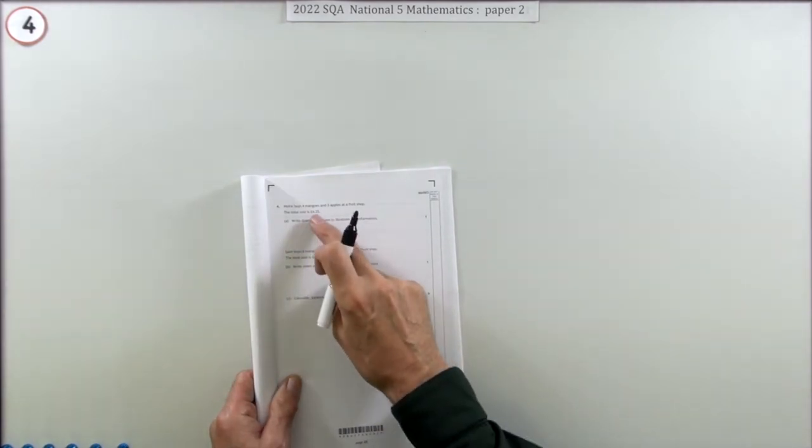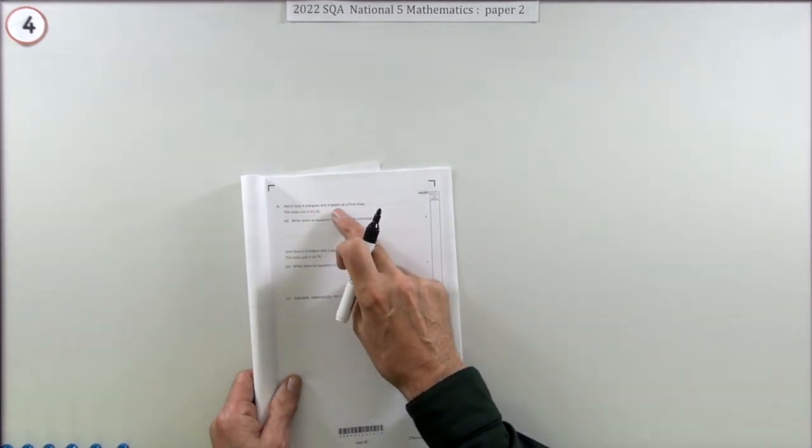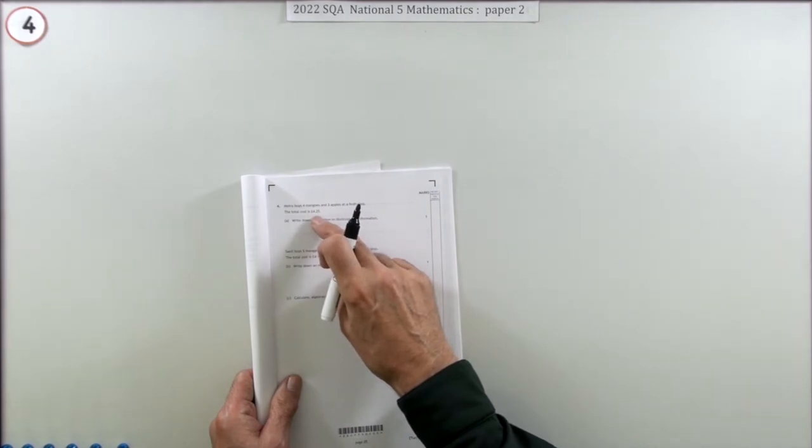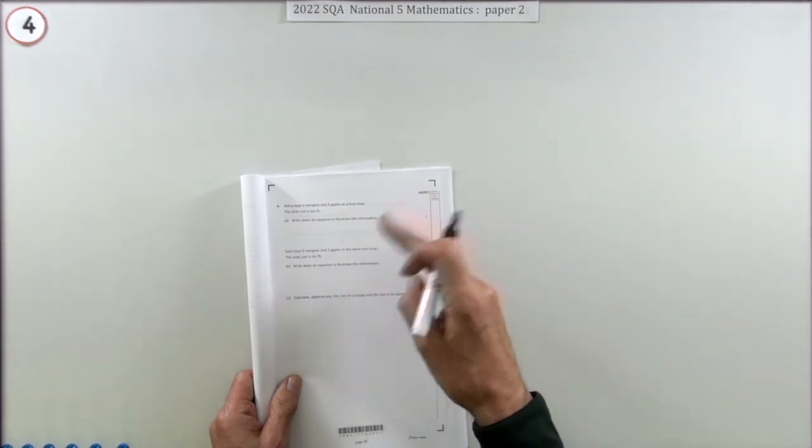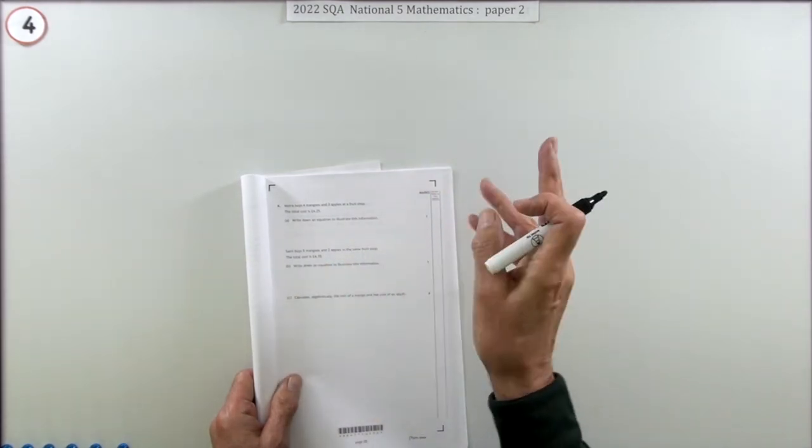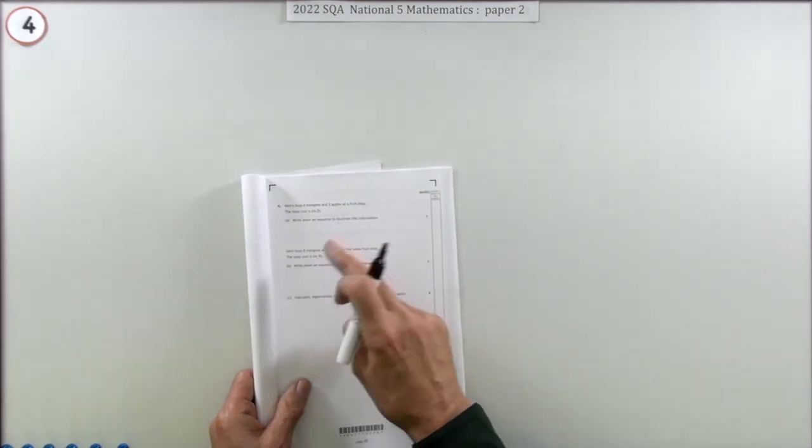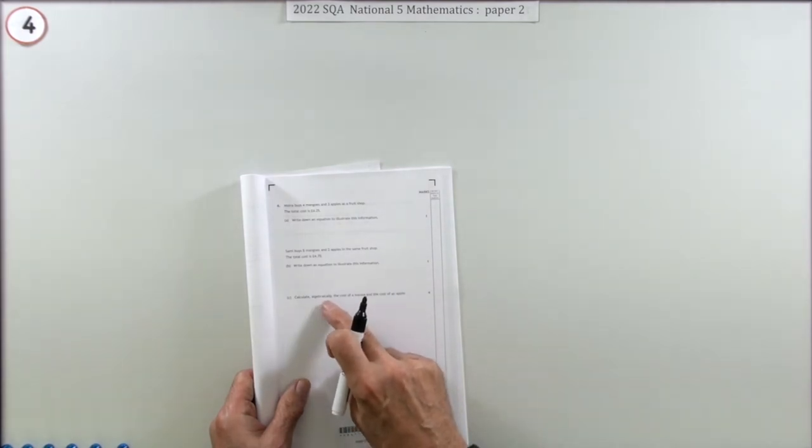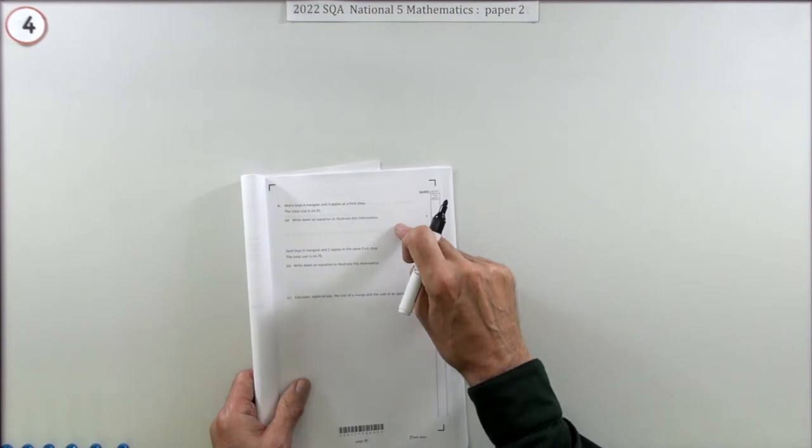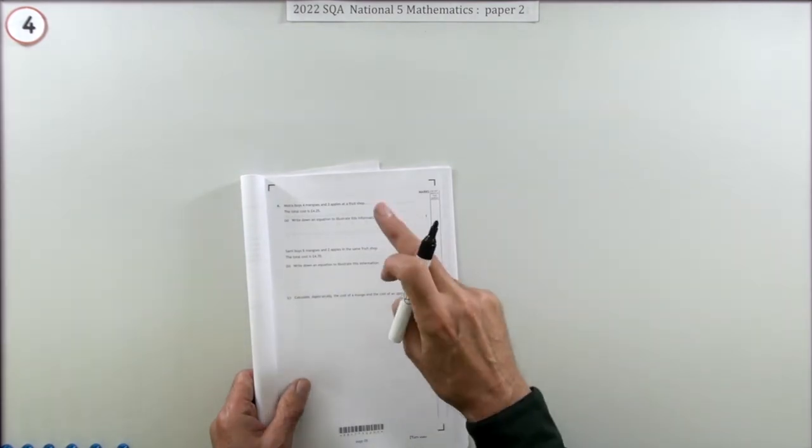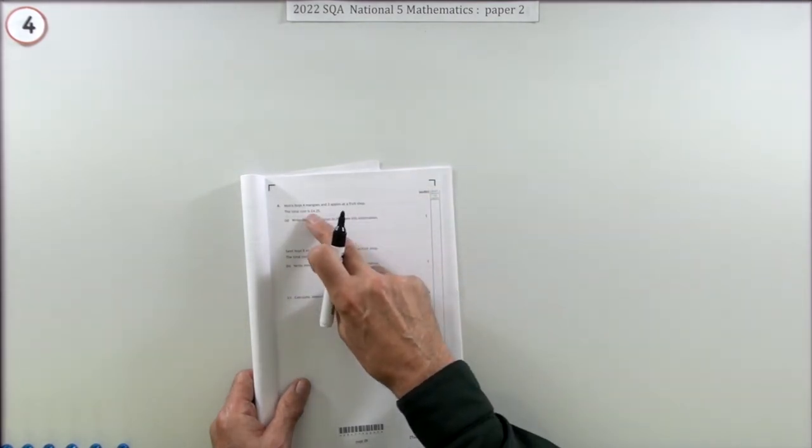You can buy four mangoes and three apples at some fruit shop for 425, and five mangoes and two apples for 470. Calculate algebraically, so don't just guess numbers and try them. Calculate algebraically the cost of a mango and the cost of an apple.